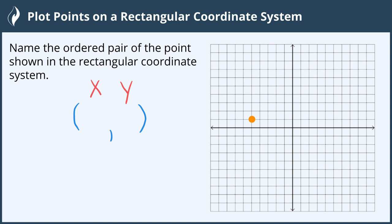The x coordinate tells us how many units we move left and right from the origin, and the y coordinate tells us how many units we move up and down from the origin.